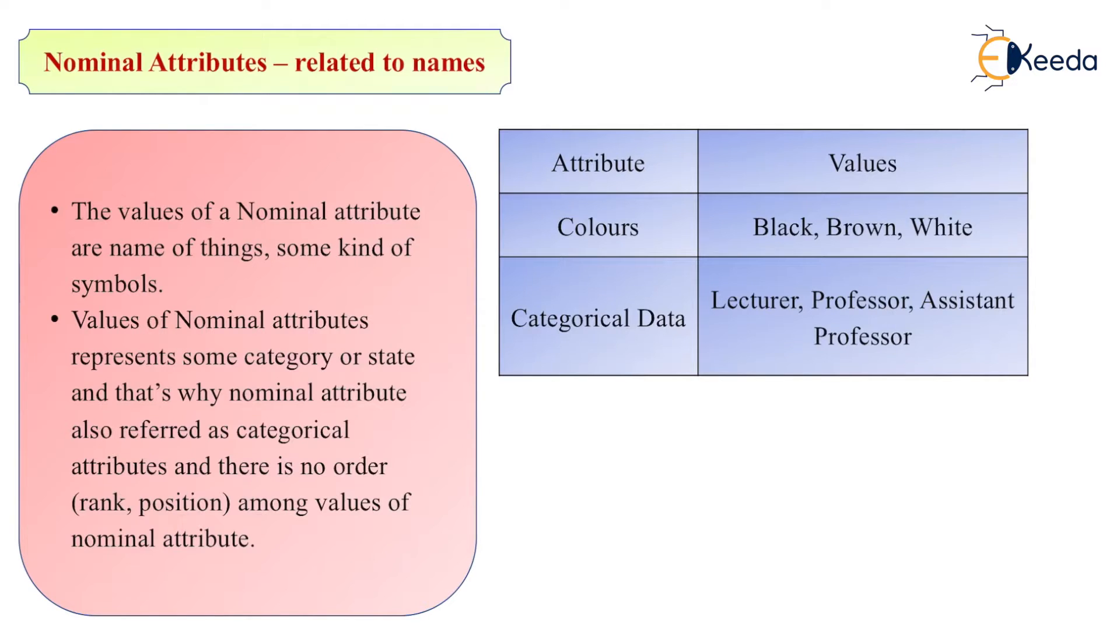The color can be black, brown, white. And the categorical data can be lecturer, professor, assistant professor, etc. That means we cannot rank them, right? You cannot say black is one, brown is two, white is three. It is random.